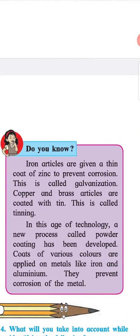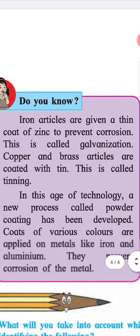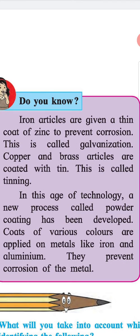Do you know? Iron articles are given a thin coat of zinc to prevent corrosion. This is called galvanization. Copper and brass articles are coated with tin. This is called tinning. In this age of technology, a new process called powder coating has been developed. Coats of various colors are applied on metals like iron and aluminum. They prevent corrosion of the metal.